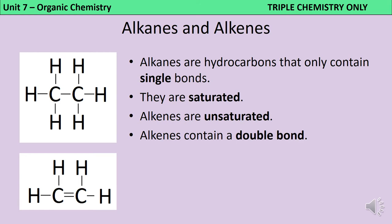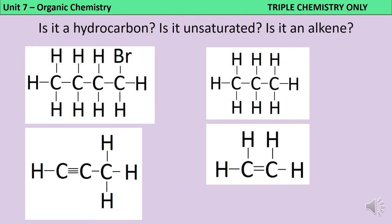Alkanes and alkenes are both examples of hydrocarbons — compounds that contain hydrogen and carbon atoms only. They differ in how those atoms are bonded. Carbon is able to make four bonds. In an alkane, each carbon atom makes bonds to four different atoms and so it can be described as being saturated. In alkenes, two of the carbon atoms are only bonded to three other atoms, so to make up the fourth bond they form a double covalent bond between the two carbon atoms. This situation is called being unsaturated. Alkenes are specifically hydrocarbons that contain a double bond.